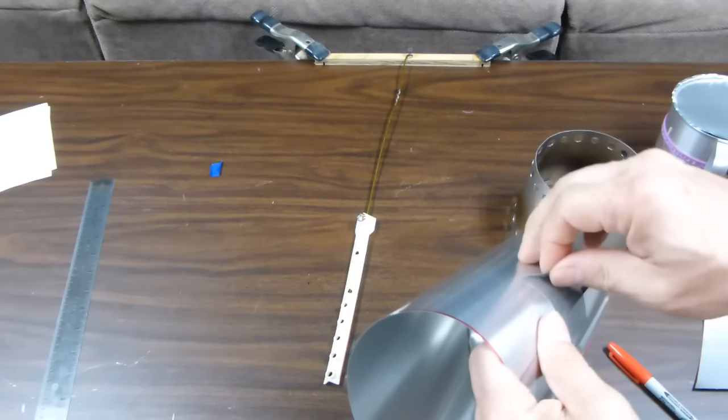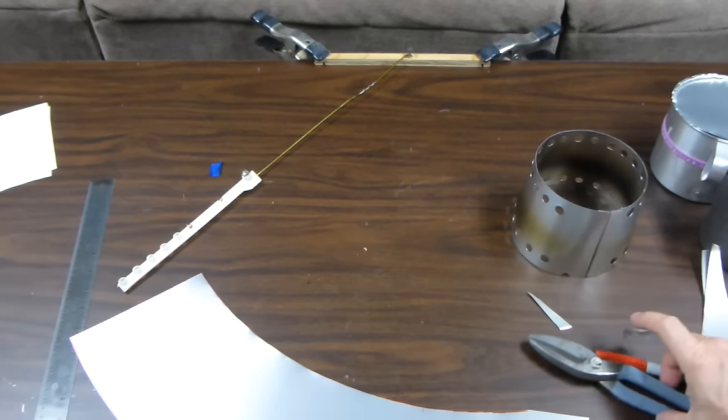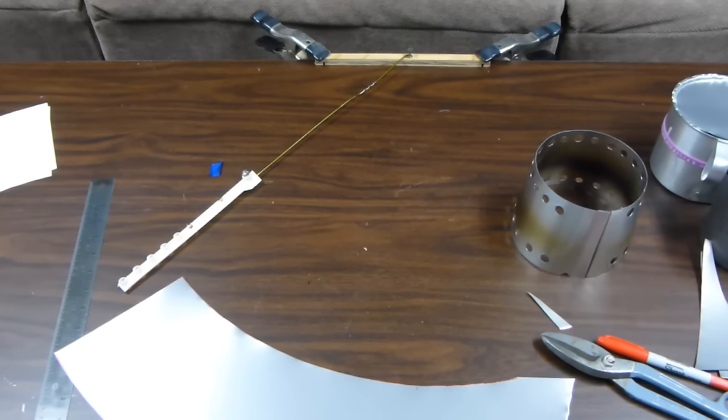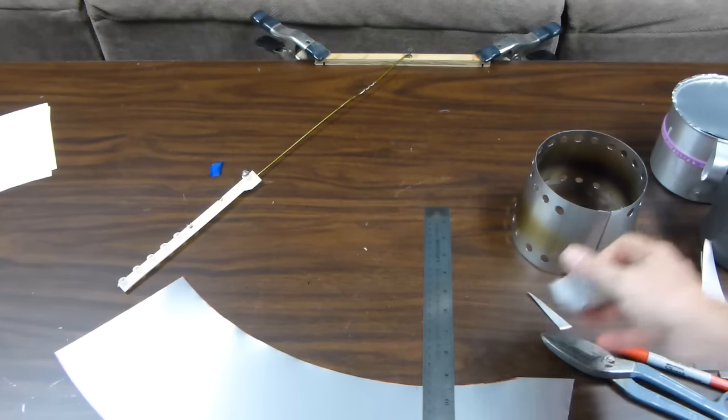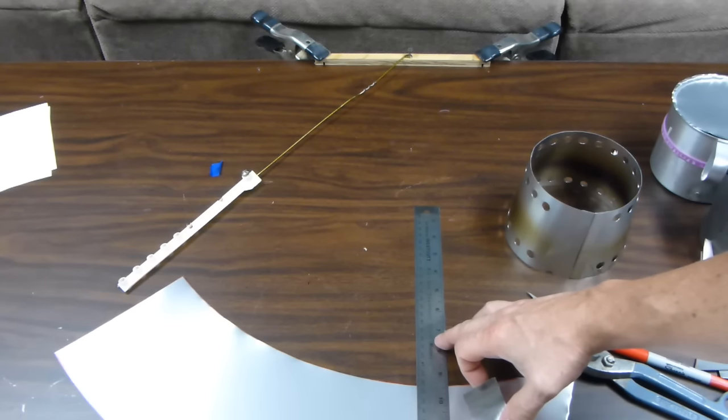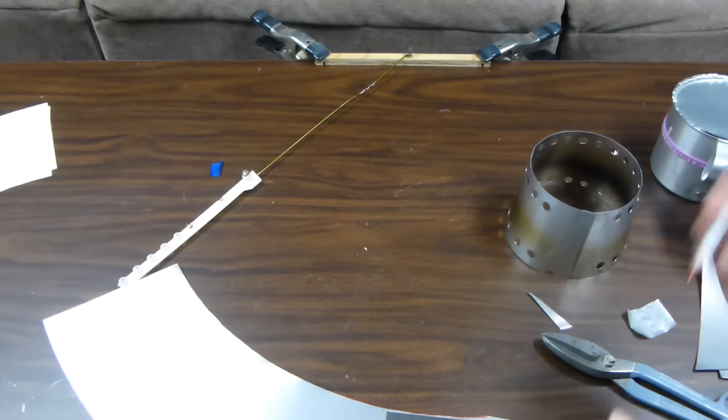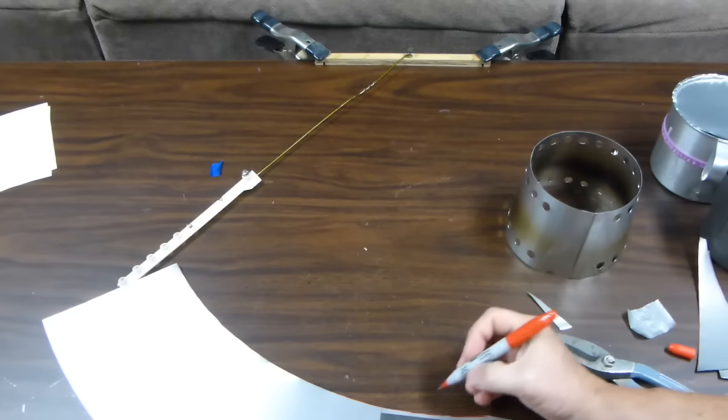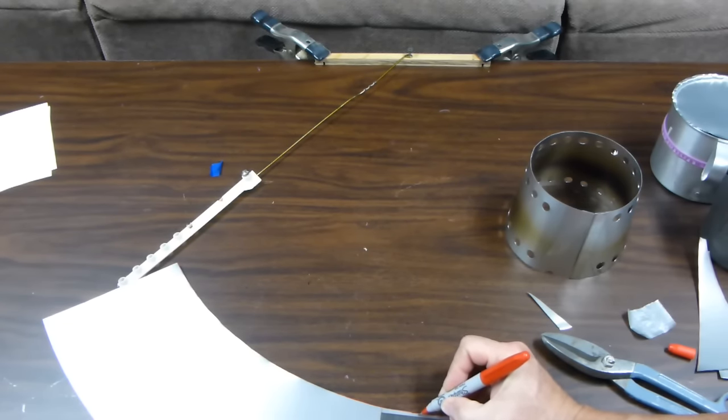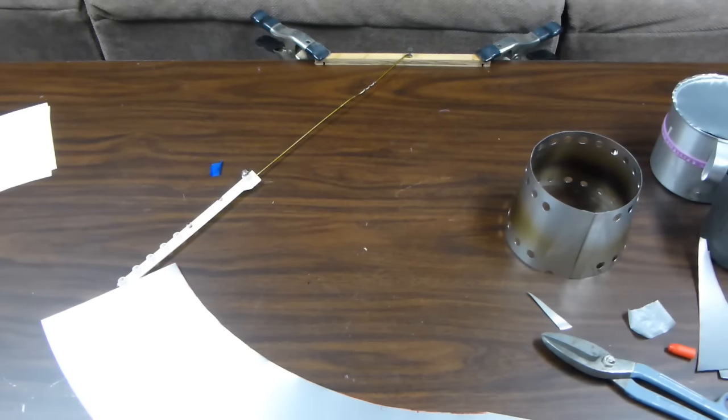So after you have your marks on there, remove your tape. And what you'll want to do is, if you make your folds of the metal a half inch on each fold, you'll want to go an inch and a half past the marks that you just made. What I'll do is make a mark an inch and a half. And I'm going to go like a sixteenth of an inch less than that, just so that I make sure I'm tight enough.